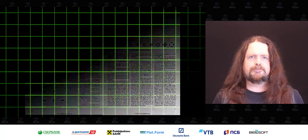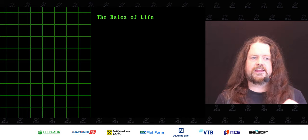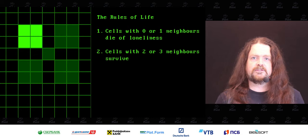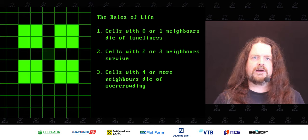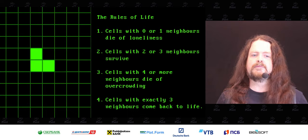When the Game of Life was first published, it's a game that's very simple to play. It's played on an infinite board with no players — you can't win. It only has four rules: if a cell has zero or one neighbors, it dies of loneliness; two or three neighbors, it survives; four or more, it dies of overcrowding; and if a cell has exactly three neighbors, it comes back to life in the next generation. That is the entire ruleset of Conway's Game of Life.